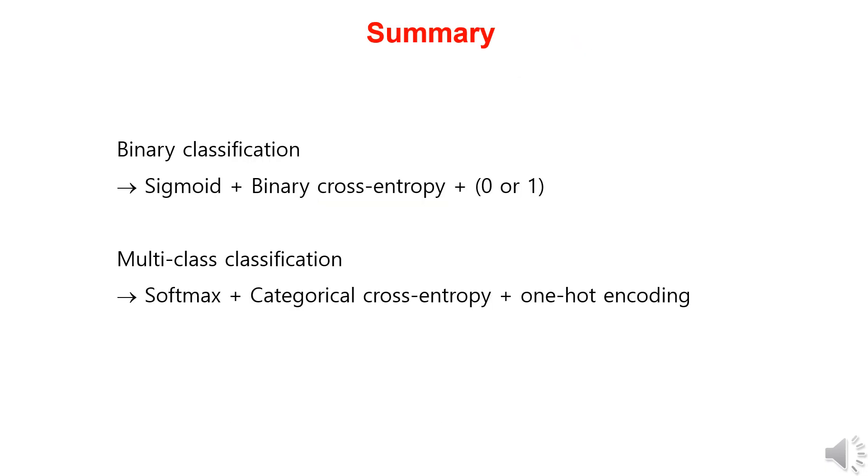To summarize the content on softmax, in binary classification, we use the sigmoid function as the activation function and binary cross-entropy as the loss function. After that, the class labels are given as 0 and 1. In multi-class classification, we use the softmax function as the activation function and categorical cross-entropy as the loss function. After that, the class labels are given in one-hot encoded form.